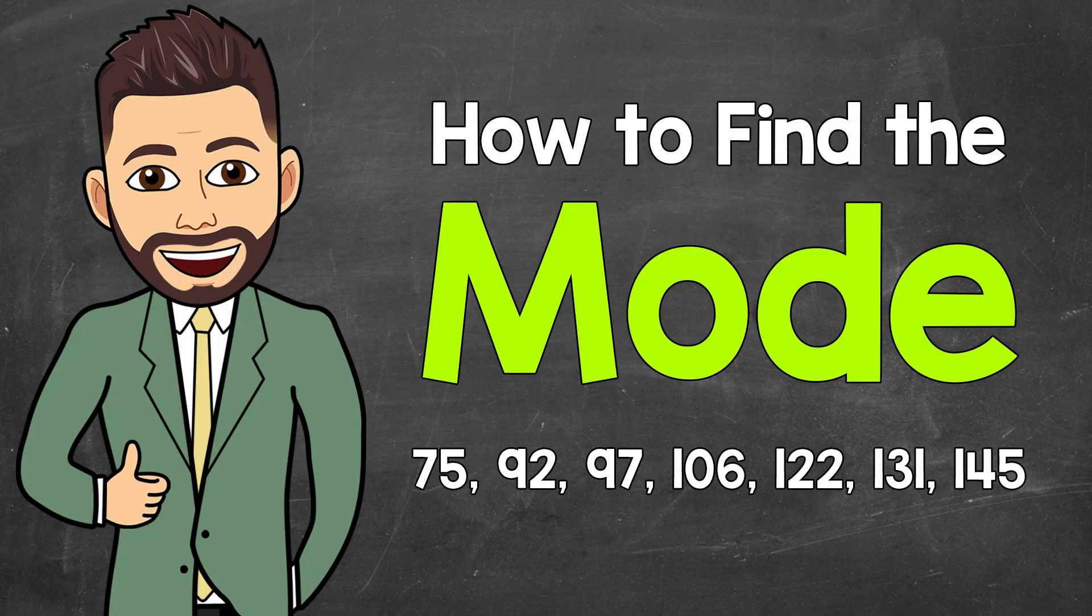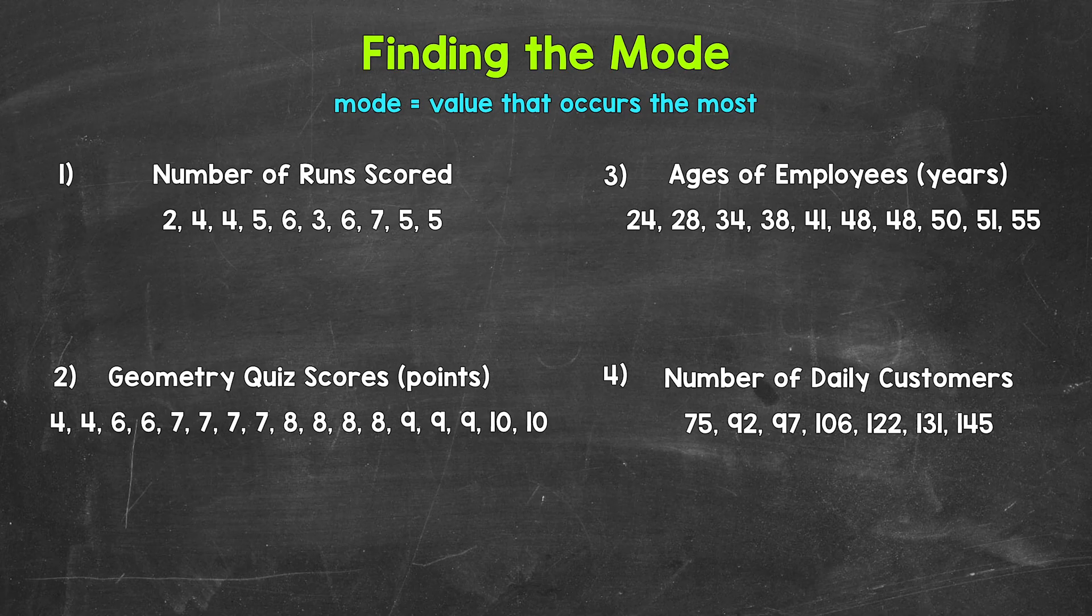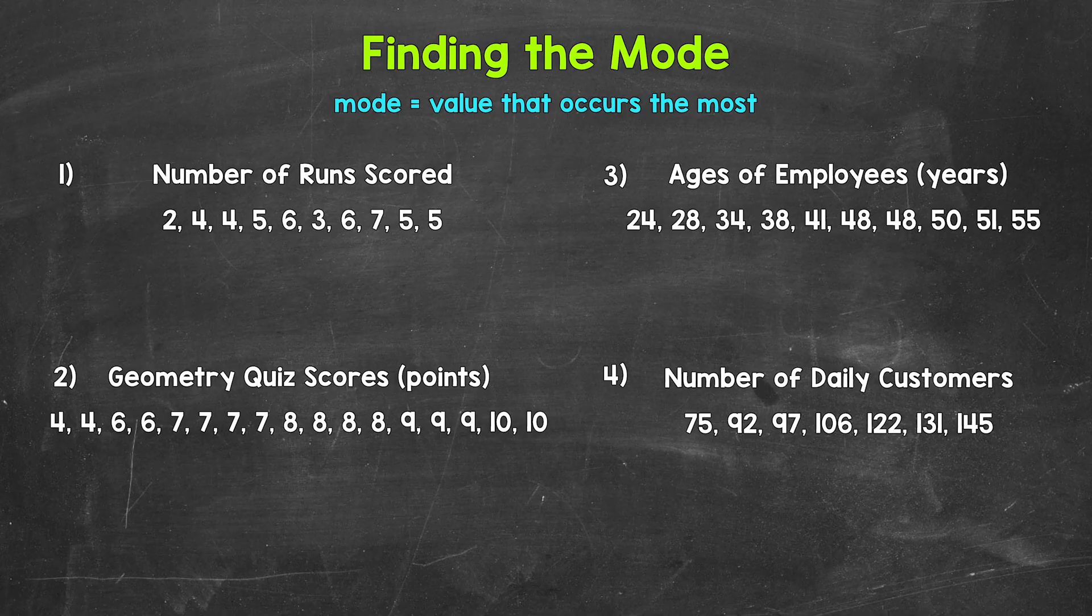Welcome to Math with Mr. J. In this video, I'm going to cover how to find the mode of a data set. Now the mode is the value or multiple values that occur the most within a data set. It's even possible to have no mode.